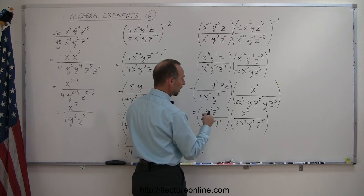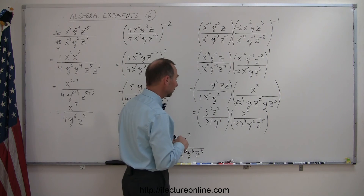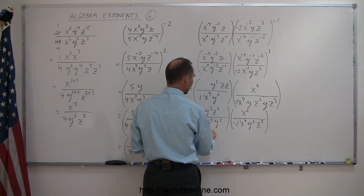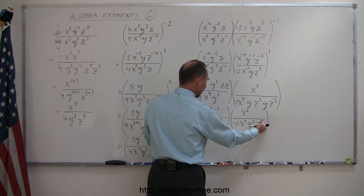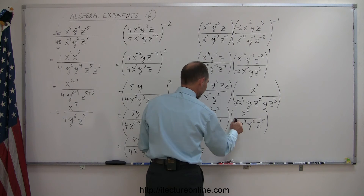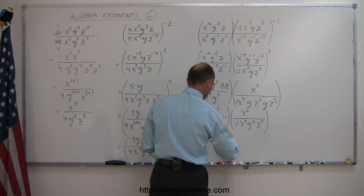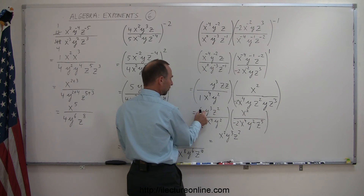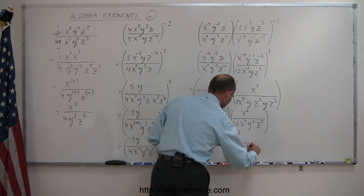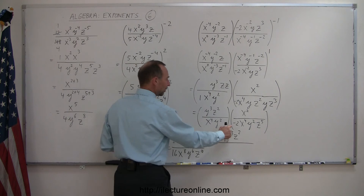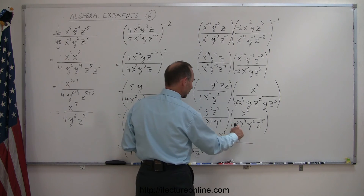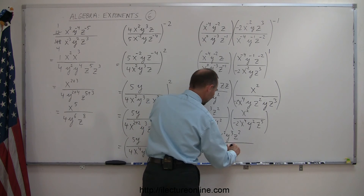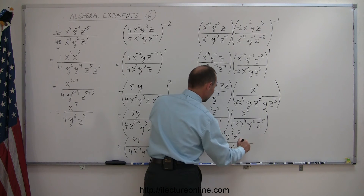We can drop the parentheses now since we're just multiplying everything together. In the numerator we have y³, z², and x². In the denominator we have x⁴, y², another x⁴, and y². Let's multiply the denominator together and add the exponents. In the numerator: x², y³, z². In the denominator: minus 2, then x⁴ times x⁴ becomes x⁸ — remember when we multiply same bases we add exponents — y² times y² becomes y⁴, and we have z⁵.